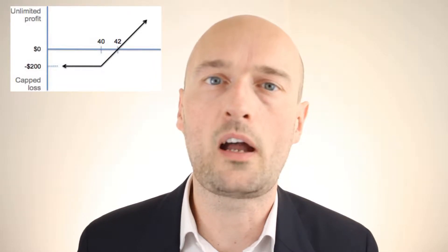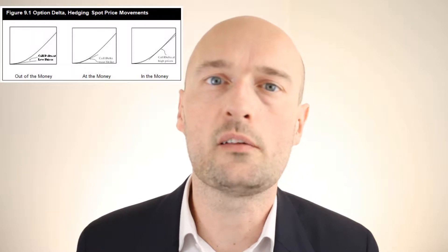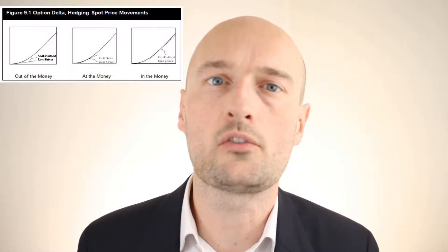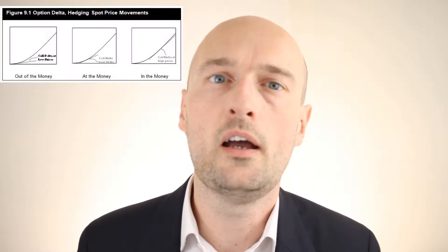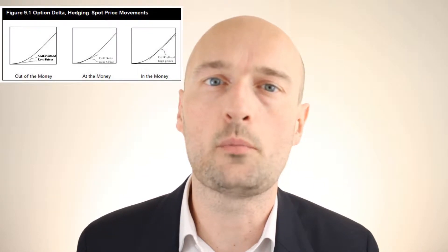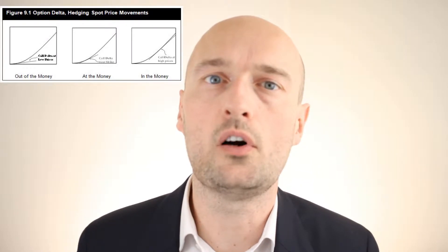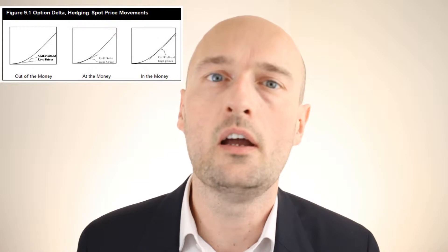If you look at how Delta changes as the stock price moves up and down, you will see that roughly speaking an at-the-money call has a Delta of around 0.5, so owning the option is a bit like owning half a share times the number of shares covered by the option. As the underlying goes up in price, the Delta increases and it becomes like owning more and more of the stock as it gets deeper and deeper into the money. As the price of the stock falls, the Delta also falls and you find yourself owning less and less of the stock in your dynamic hedging.